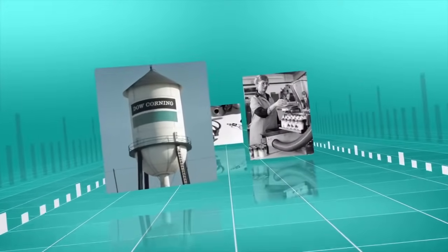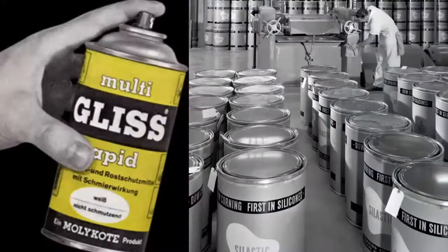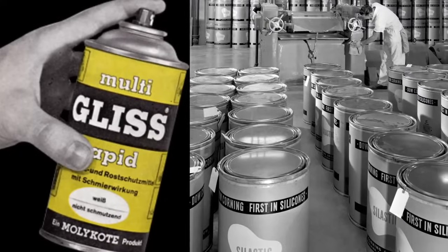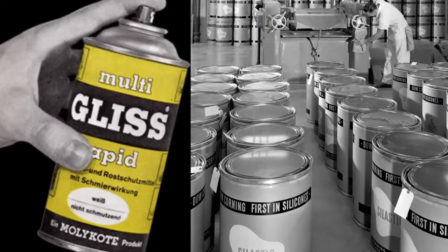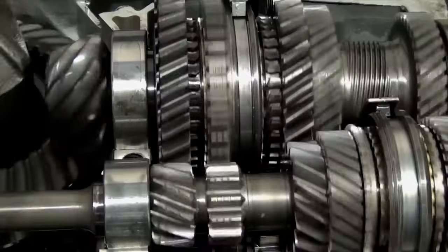The line of MOLLECODE solid film lubricants perfectly complemented Dow Corning's already existing line of silicone and fluorosilicone lubricants, expanding capabilities across emerging industrial applications.